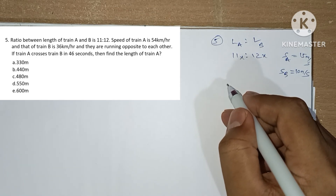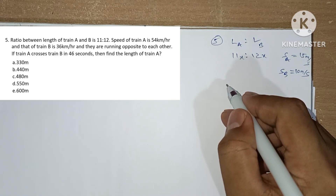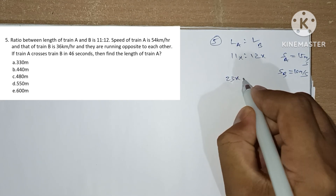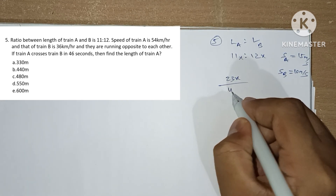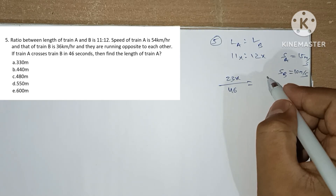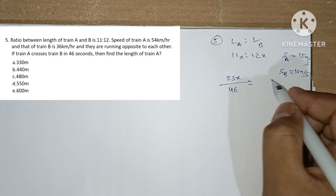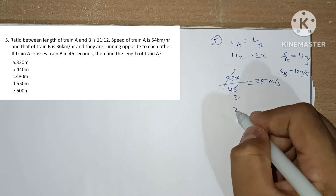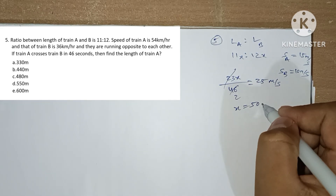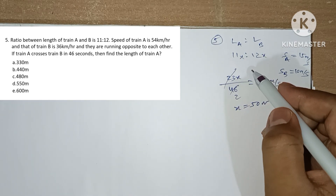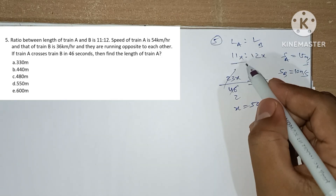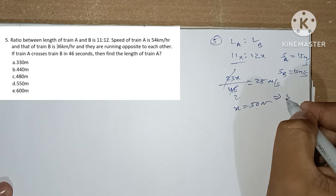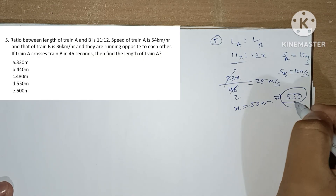The trains are running in opposite directions. Train A crosses train B in 46 seconds. Sum of lengths is 23x, and sum of speeds is 10 + 15 = 25 m/s. So 23x / 46 = 25, giving 2x = 50 meters, meaning x = 50. Length of train A is 11x = 11 × 50 = 550 meters. Option D is the answer.